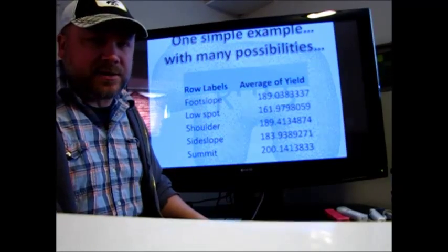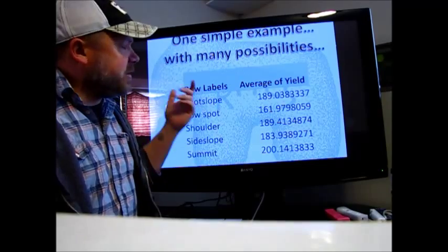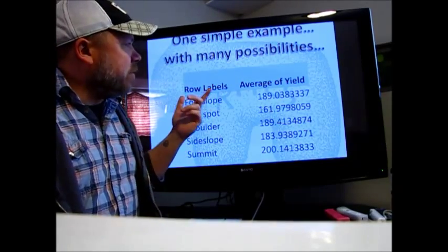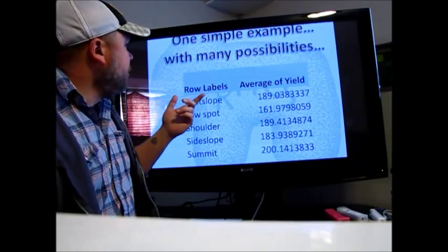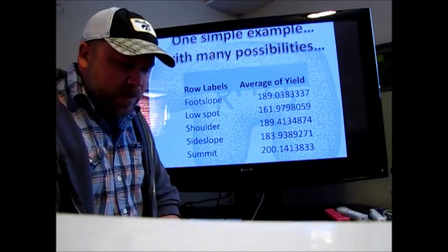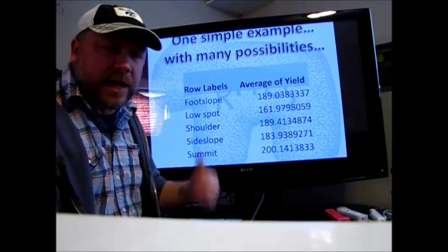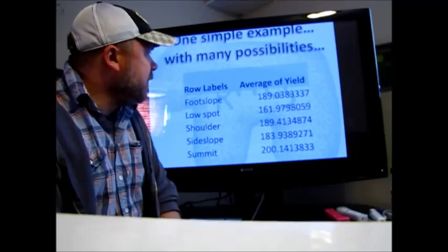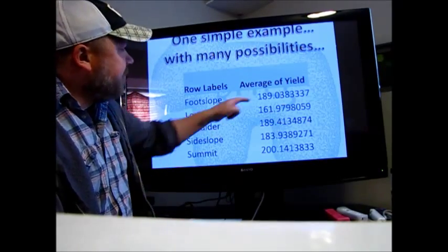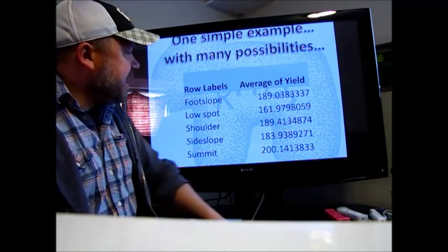This is just one very simple example of what you could do when you're done running this tool. Here all I did was create a pivot table - I exported the table, the final output, to Excel and then just ran a pivot table real quick of average yield within a certain landscape category.